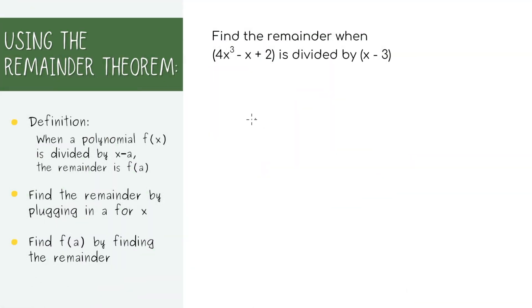We'll start off with the definition of the remainder theorem. It basically says that if you have some type of polynomial like this and divide it by x minus a, so like any polynomial like x minus 3 or x plus 4 or x minus 2, whatever, you can find the remainder pretty quickly by plugging in this a value into the first polynomial.